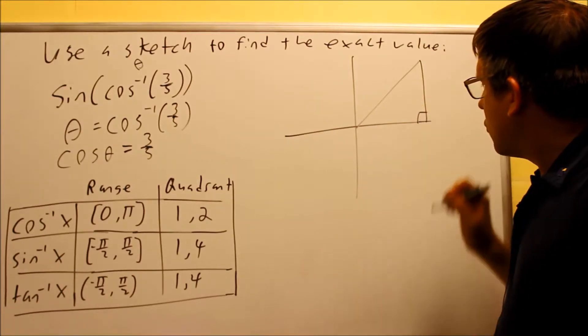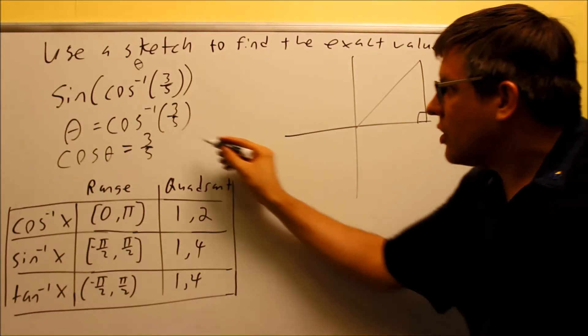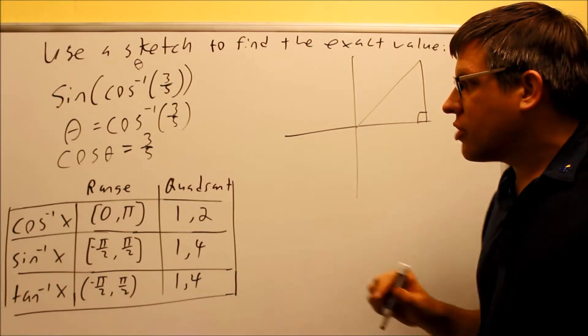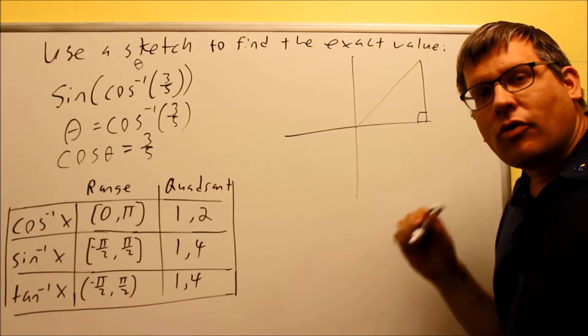Now that I have the triangle drawn in the right quadrant, I'm ready to use the definition for cosine in order to label my sides. So for this, cosine is equal to adjacent over hypotenuse.